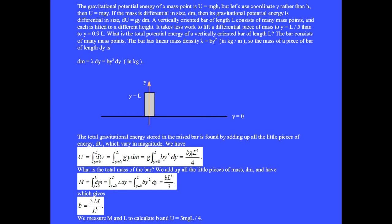We do work to lift a piece of mass to this height, and a heavier piece of mass to this height, and a yet heavier piece of mass to this height. The total gravitational energy stored in the raised bar is found by adding up all the little pieces of energy du, which vary in magnitude.